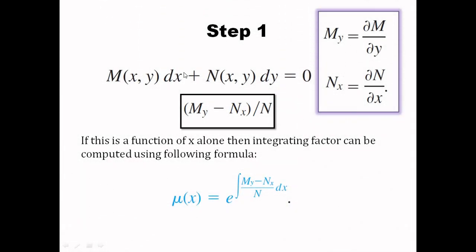We start with a given differential equation in its general form. Suppose we know that this equation is non-exact and we need to make it exact. First, I need to find out M subscript y, which is the partial derivative of M with respect to y, and N subscript x, which is the partial derivative of N with respect to x. Then I need to find the function (My minus Nx) divided by N. If this comes out to be a function of x alone, then the integrating factor can be computed using the following formula.